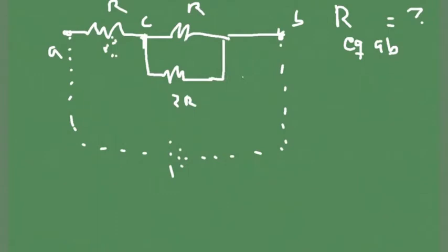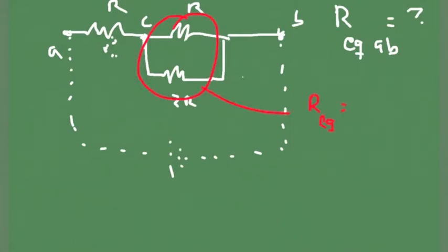Now we look again and see if there are two resistors connected in series or in parallel. Now that I redo the circuit, you see that R and 2R are connected in parallel. So we replace those two with one equivalent resistance. The quick formula: multiply the resistors and divide by the sum — so 2 times 1 is 2, divided by 2 plus 1. The equivalent resistance of these two is 2/3 R, so about 0.66 R.